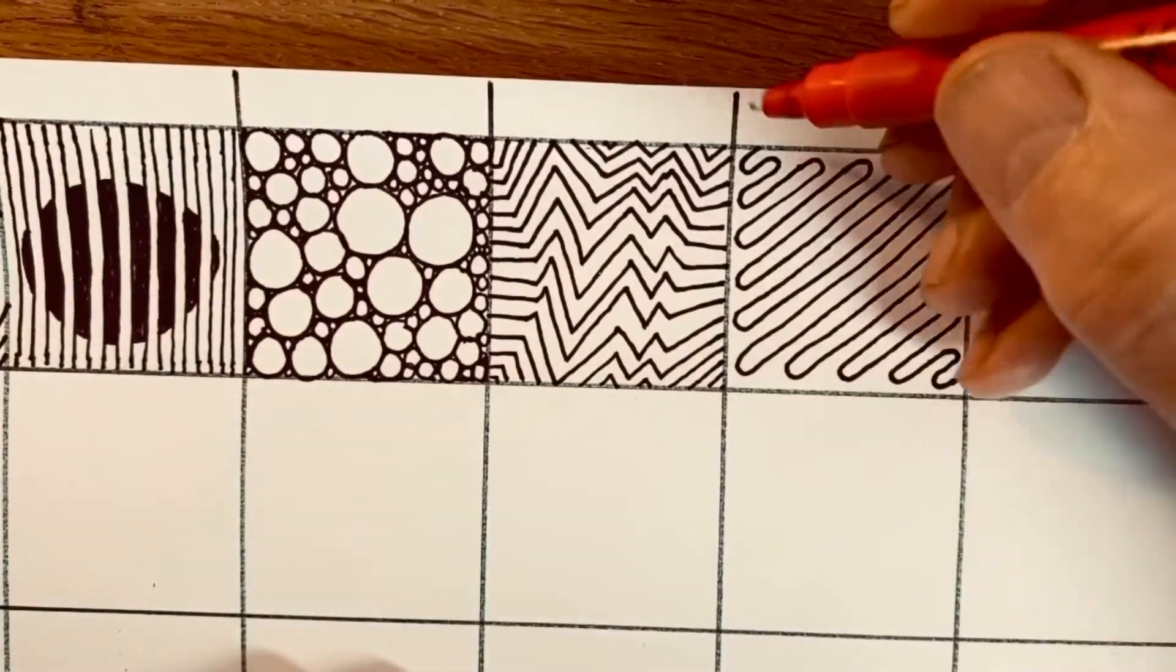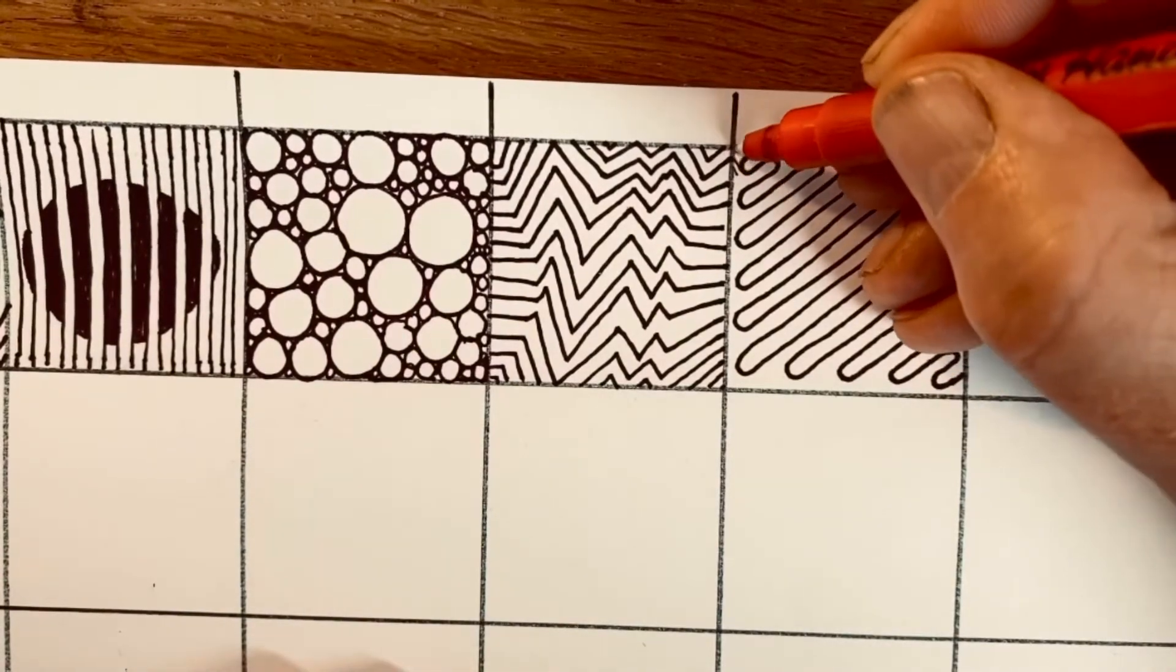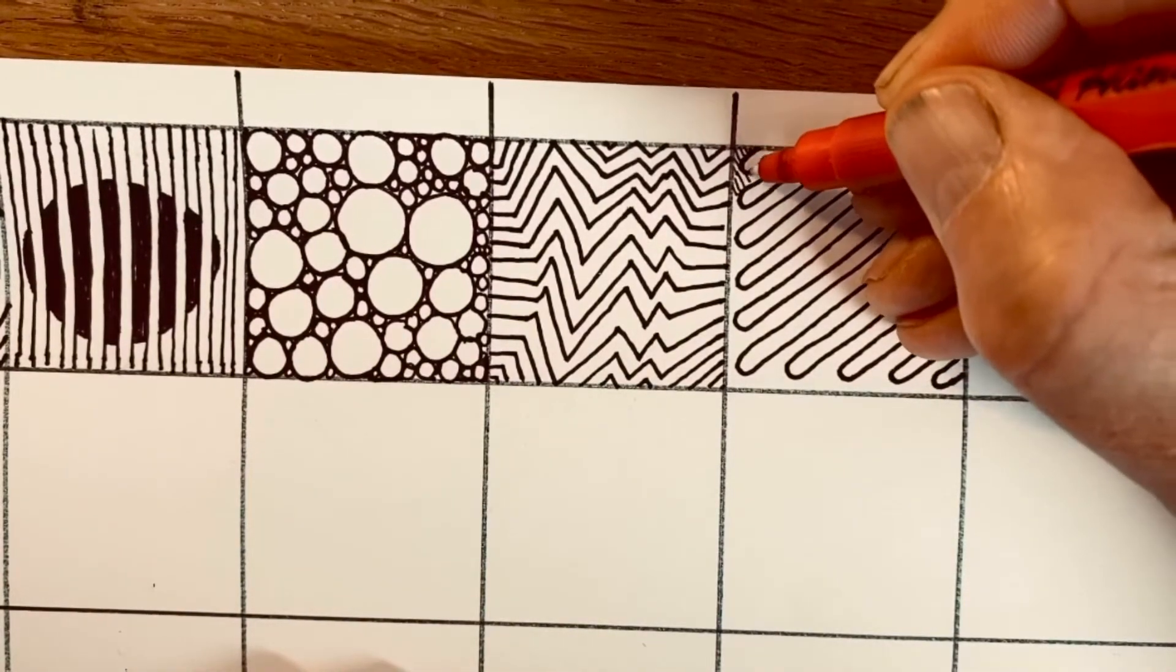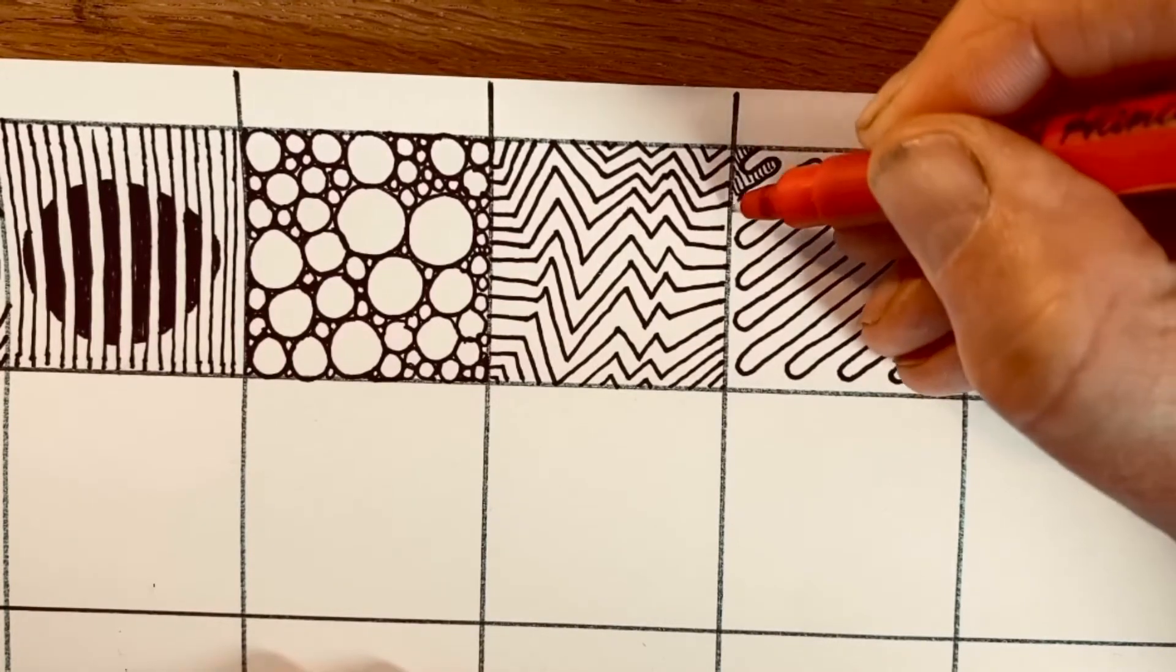Now I could leave it like that but let's do some shading. So I'm just going to do some very simple shading using lots of little lines.